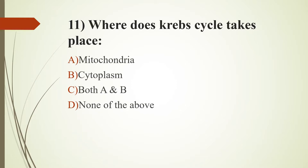Eleventh question: Where does the Krebs cycle take place? Option A, mitochondria. Option B, cytoplasm. Option C, both A and B. Option D, none of the above. The answer is Option A, mitochondria. The Krebs cycle is also known as the TCA cycle (tricarboxylic acid cycle) or citric acid cycle. It takes place in mitochondria, while glycolysis takes place in cytoplasm. Another name for glycolysis is the EMP pathway.